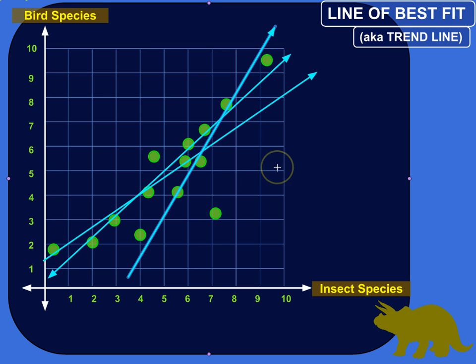So lines of best fit are estimations. And they can be closer or farther away from the observed reality. Thank you.